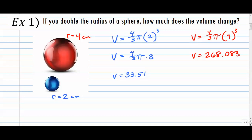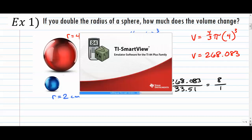You can continue picking numbers like that to see what happens, or you can use a little shortcut. To get at that shortcut, let's look at what happens when you literally make a ratio of these two volumes. Dividing 268.083 by 33.51 — using exact values — gives us 8 over 1. So the ratio between volumes is 8 to 1.